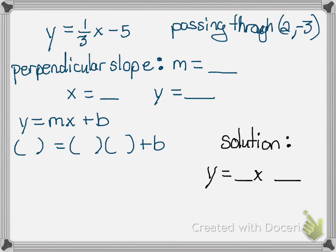Alright, my perpendicular slope is negative 3. We know it's passing through the point 2, negative 3, so that's my x and my y.